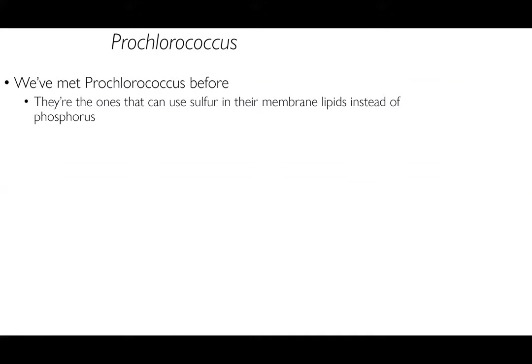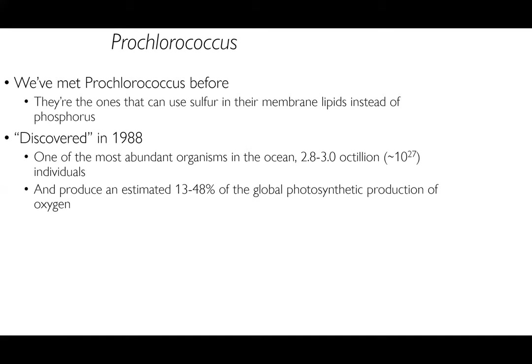One of the most important photosynthetic bacteria in the ocean is Prochlorococcus, which we've met before — these bacteria can use sulfur in their membrane lipids instead of phosphorus. This genus was discovered in 1988 — though they've existed for a very long time. They are one of the most abundant organisms in the oceans: there are 2.8 to 3 octillion (10^27) individuals across all global oceans. They produce an estimated 13 to 48 percent of the global photosynthetic production of oxygen — potentially upwards of half of every breath you take comes from just this one organism.